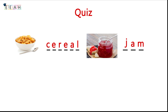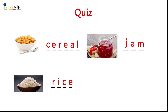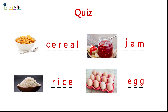Word number three is a four-letter word you can have for lunch. It starts with 'R,' the second letter is 'I,' it is white and you can usually have it with meat. Yes — rice! That's the correct guess. The last word is a three-letter word you usually have for breakfast. You can boil it or fry it. Yes — an egg! You can eat eggs for breakfast. Good job!